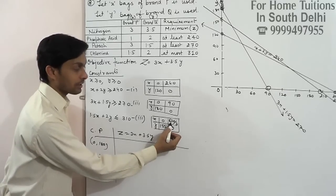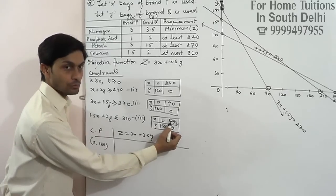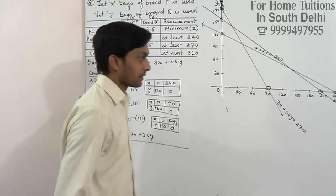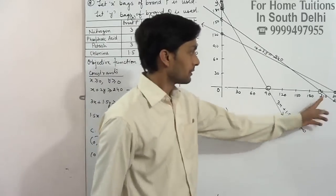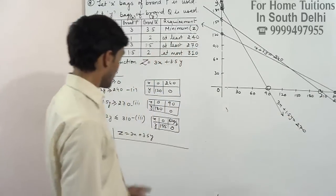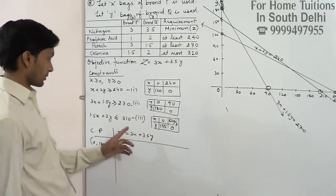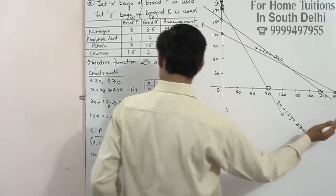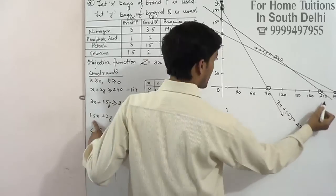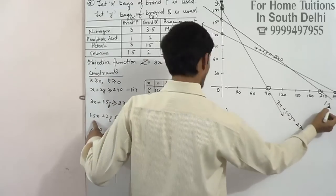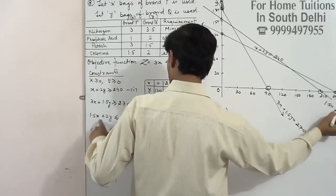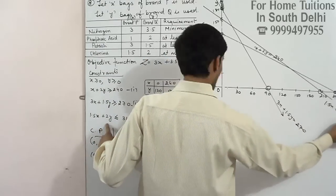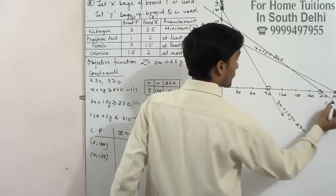3 means around 2, 0, 3. This equation is wrong: 3x plus 3.5. This equation is wrong: 1.5x plus 2y. This is wrong.